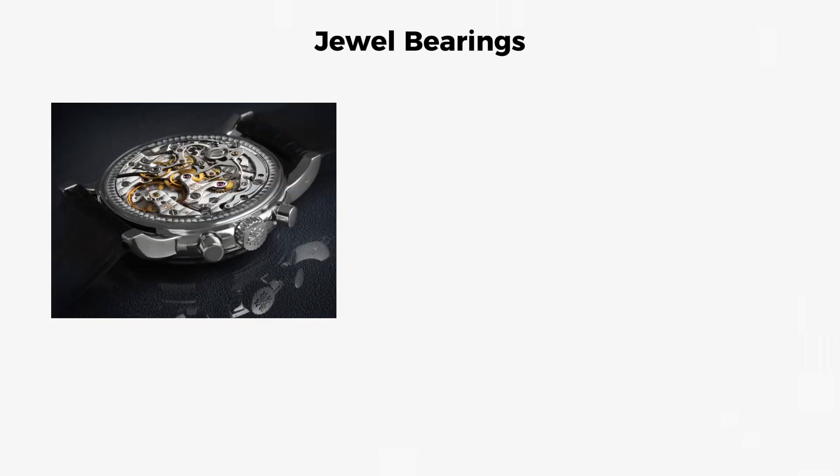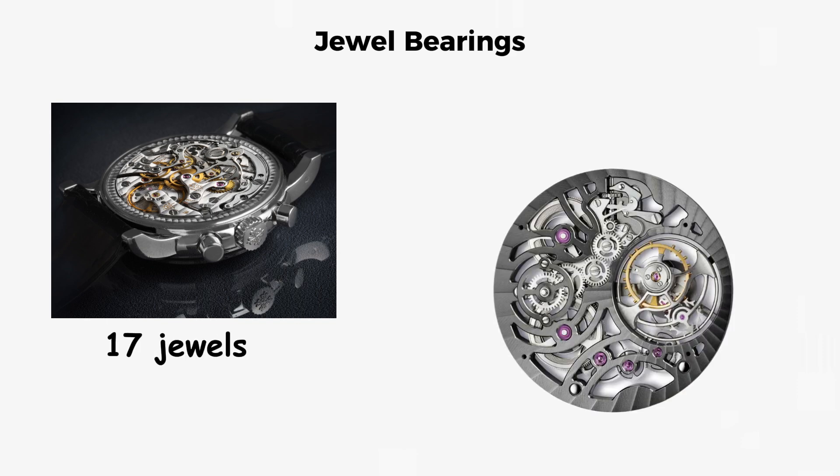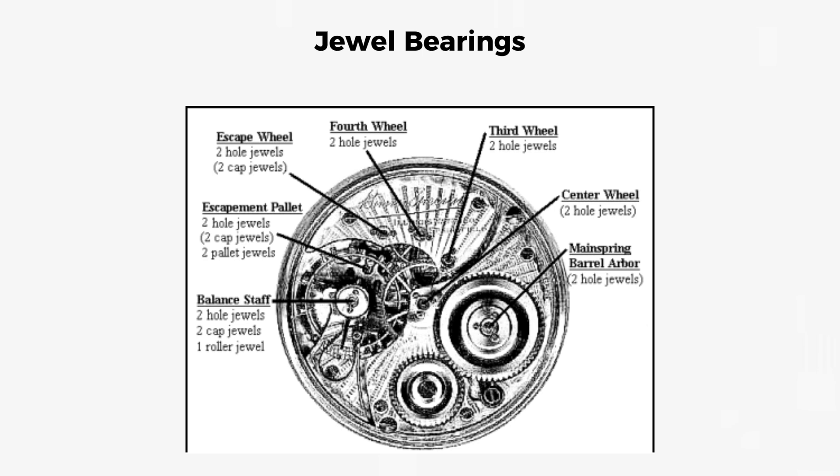A fully jeweled mechanical watch typically contains 17 jewels strategically placed at the highest stress points. The balance wheel gets five jewels: two pivot jewels, two cap jewels, and one impulse jewel. The pallet fork gets two pivot jewels and two pallet jewels. The escape wheel, fourth wheel, third wheel, and center wheel each get two pivot jewels.